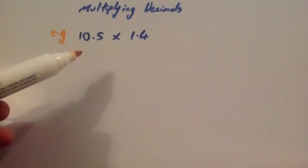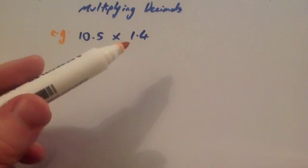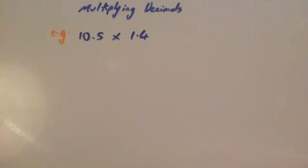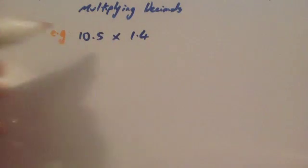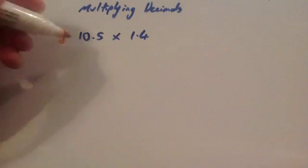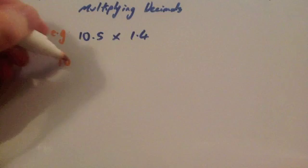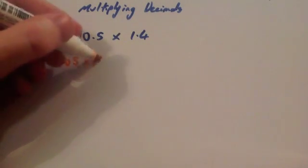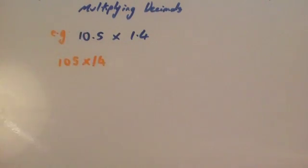We're now going to do 10.5 multiplied by 1.4. Step one: ignore the decimal points, so we're going to do 105 multiplied by 14. We'll definitely have to use the grid method to work this out.